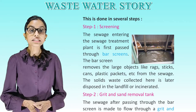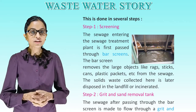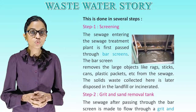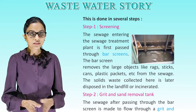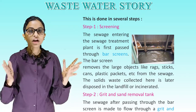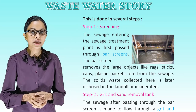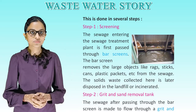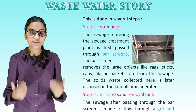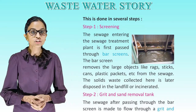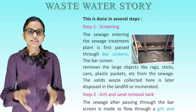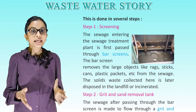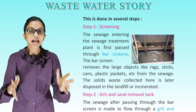Step 1 — Screening: the sewage entering the treatment plant is first passed through bar screens. The bar screen removes large particles like bags, sticks, cans, and plastic packets from the sewage. The solid waste collected here is later disposed of in a landfill or incinerated.